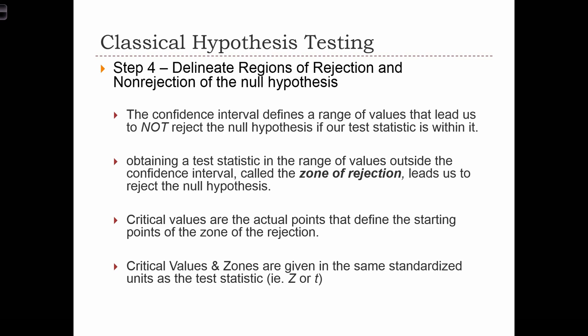In step four, we delineate the regions of rejection and non-rejection of the null hypothesis. Thinking in terms of confidence intervals, we can use the confidence interval to define a range of values that lead us not to reject the null hypothesis if our test statistic is within that range. If we obtain a test statistic outside the confidence interval — the zone of rejection — that leads us to reject the null hypothesis. We will have critical values as the cutoff points that define the start and end of the zones of rejection and acceptance.